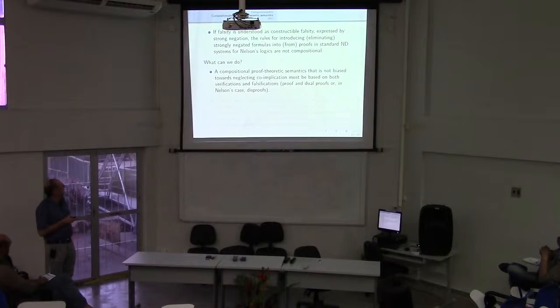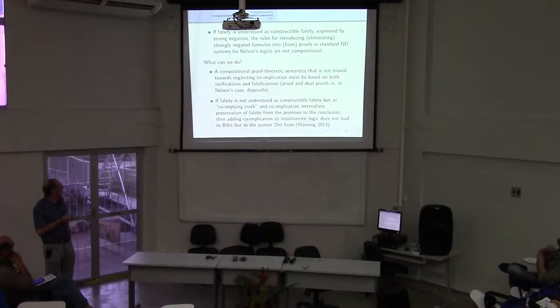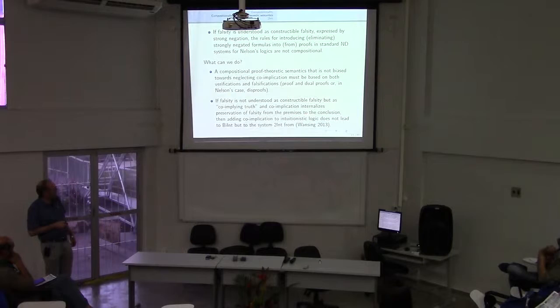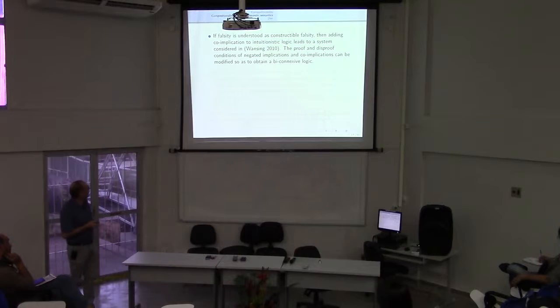So what can we do? I would say that a compositional proof-theoretic semantics that is not biased towards neglecting co-implication must be based on both verifications and falsifications — proofs and dual proofs. In Nelson's logic where we have strong negation, I would talk about disproves instead of dual proofs. If falsity is not understood as constructible falsity but as co-implying truth, and co-implication internalizes preservation of falsity from the premises to the conclusion, then adding co-implication to intuitionistic logic does not give you Heiting-Brauer logic but a system I have called two-intuitionistic logic.